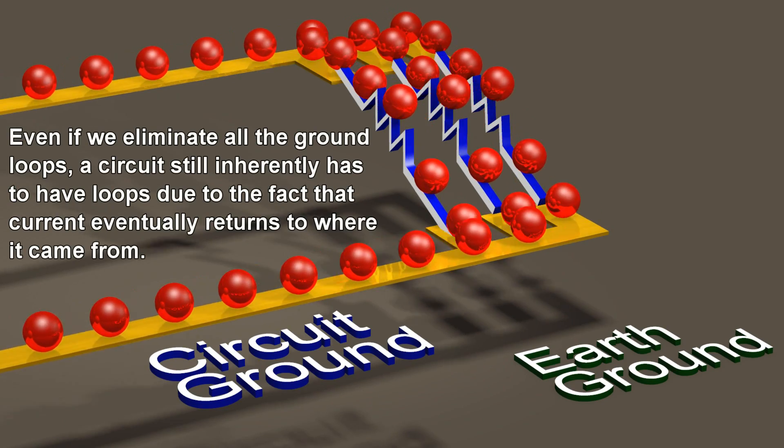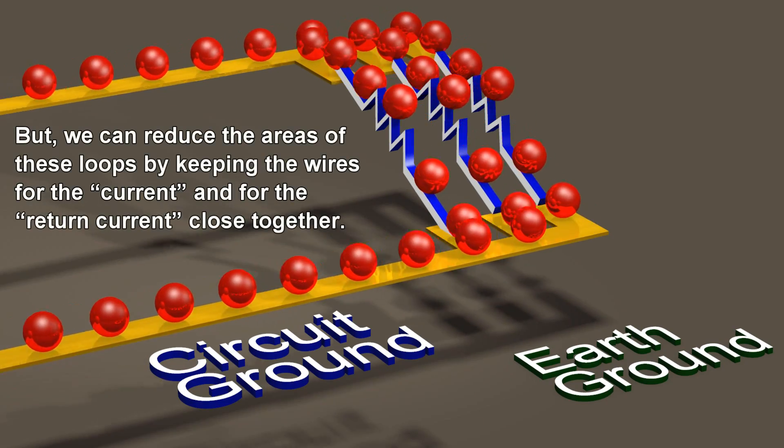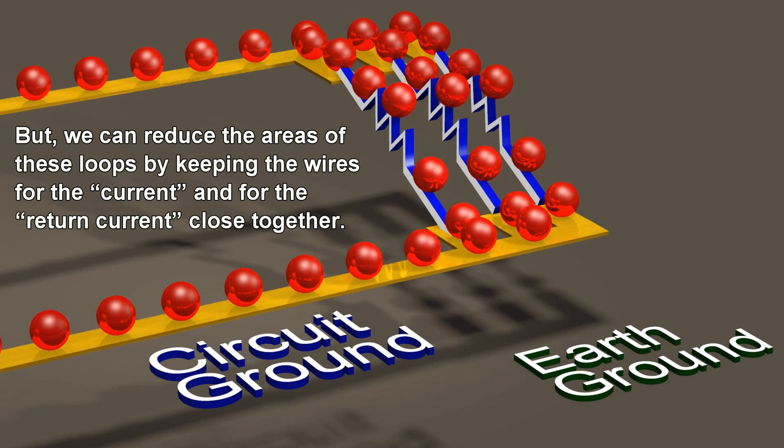Even if we eliminate all the ground loops, a circuit still inherently has to have loops due to the fact that current eventually returns to where it came from. But we can reduce the areas of these loops by keeping the wires for the current and for the return current close together.